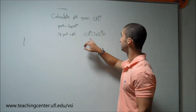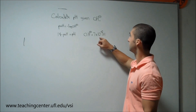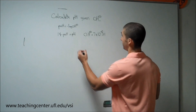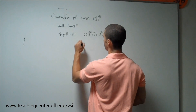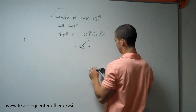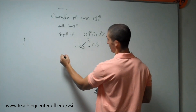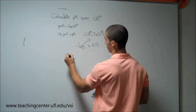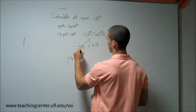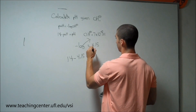We're going to take the negative log of the hydroxide concentration, which is 7 times 10 to the negative 5 molar. When we plug that in, the negative log of that equals 4.15. Then we're going to take that, subtract it from 14, and that will give us a final pH of 9.84.